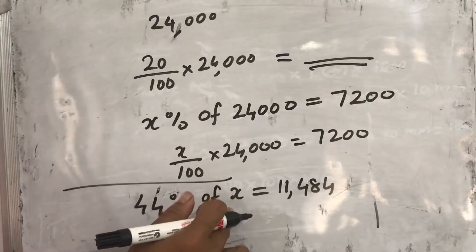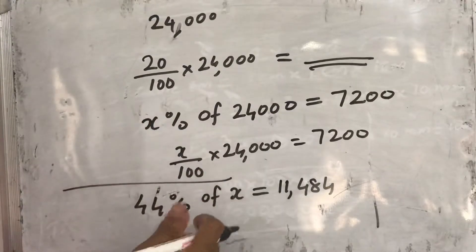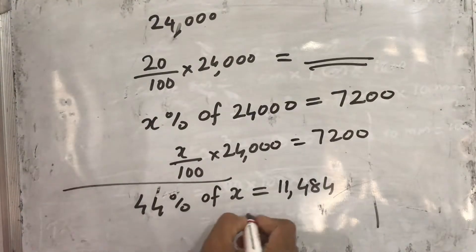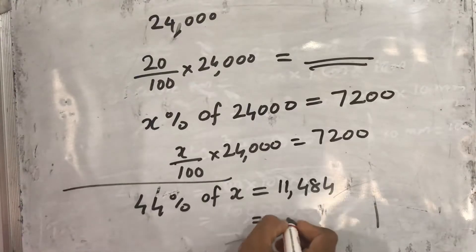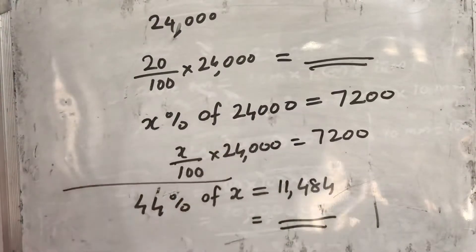Let the total votes be X. From this, we can find out the total number of votes using the equation 44% of X equals 11,484. We can calculate how many total votes there were.